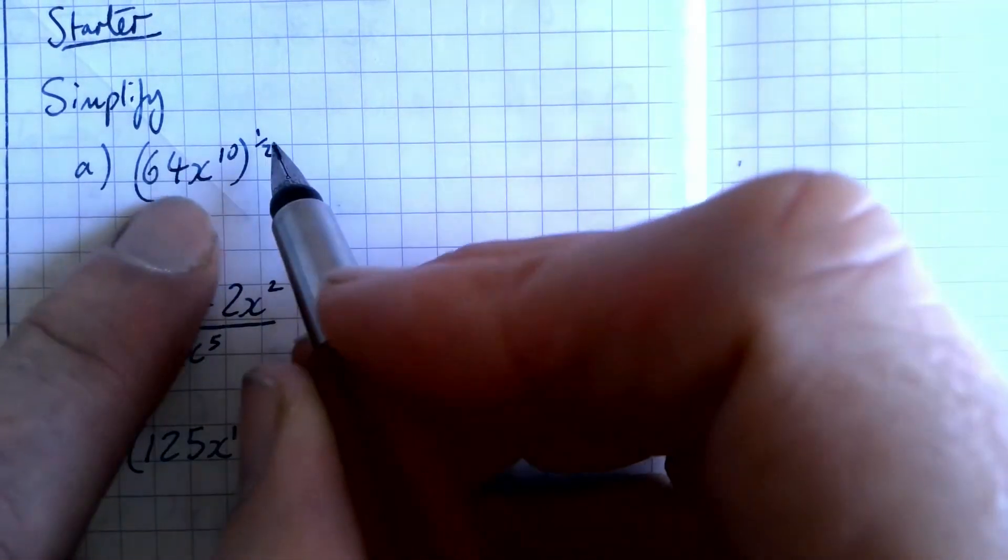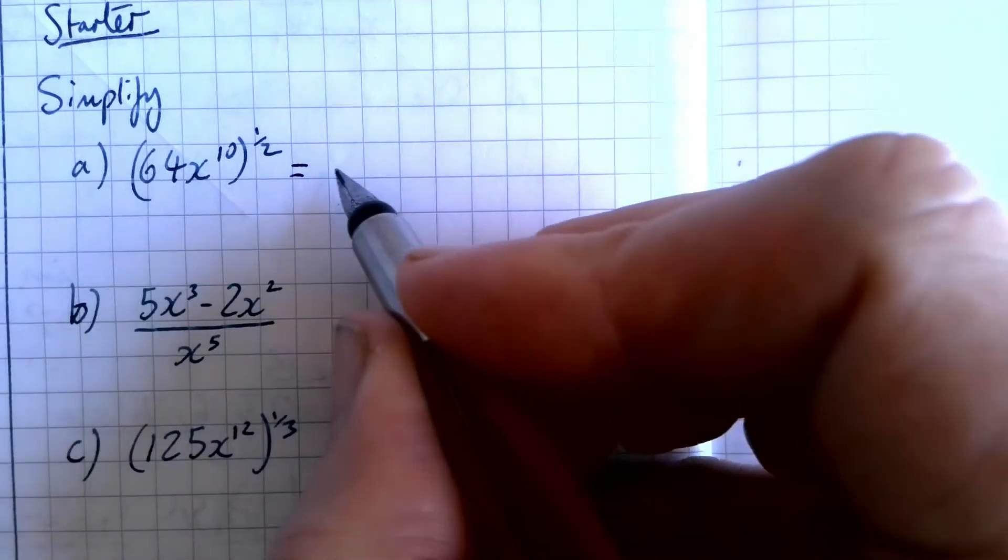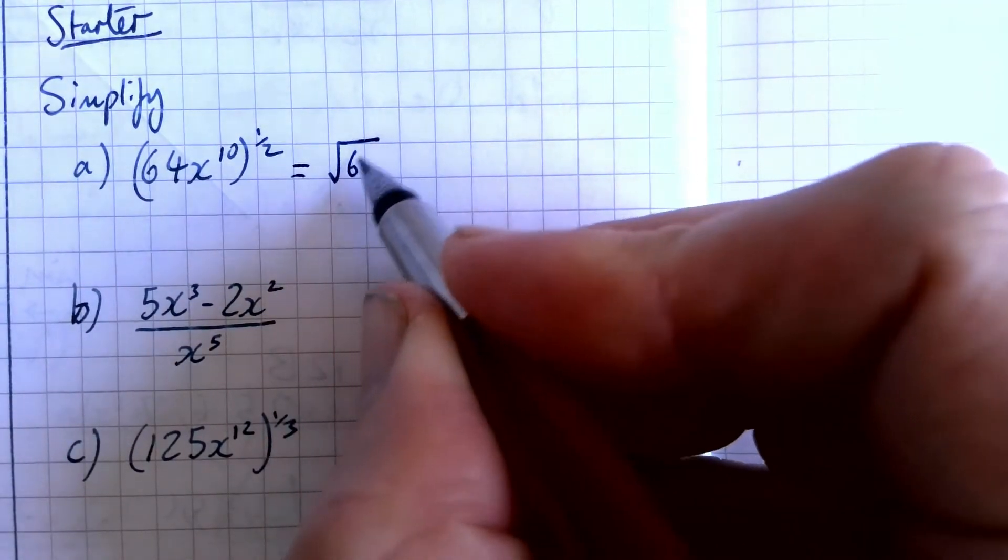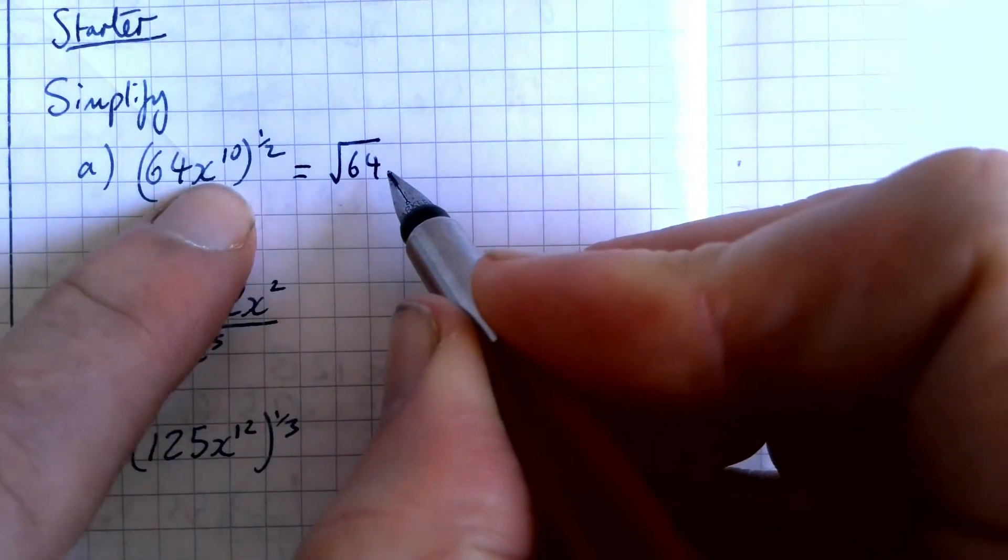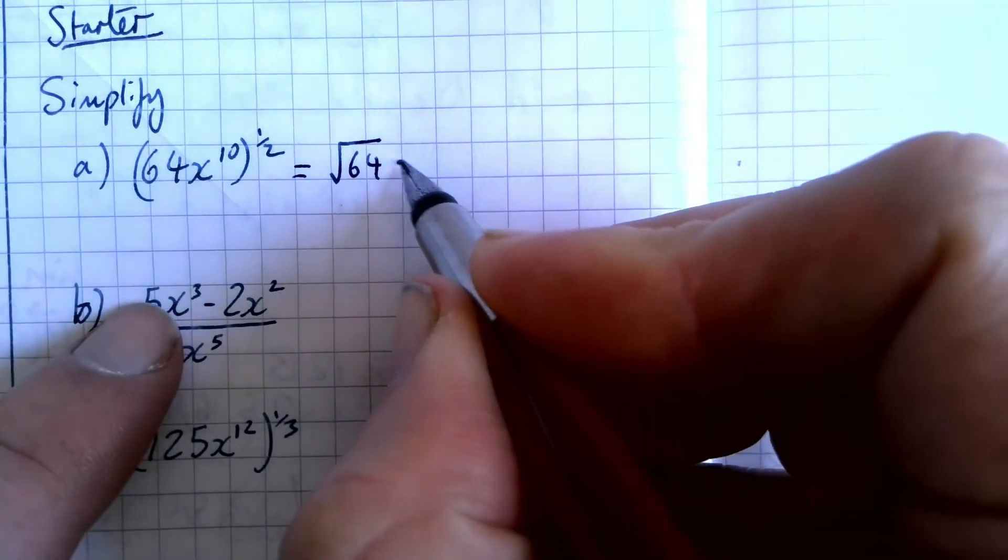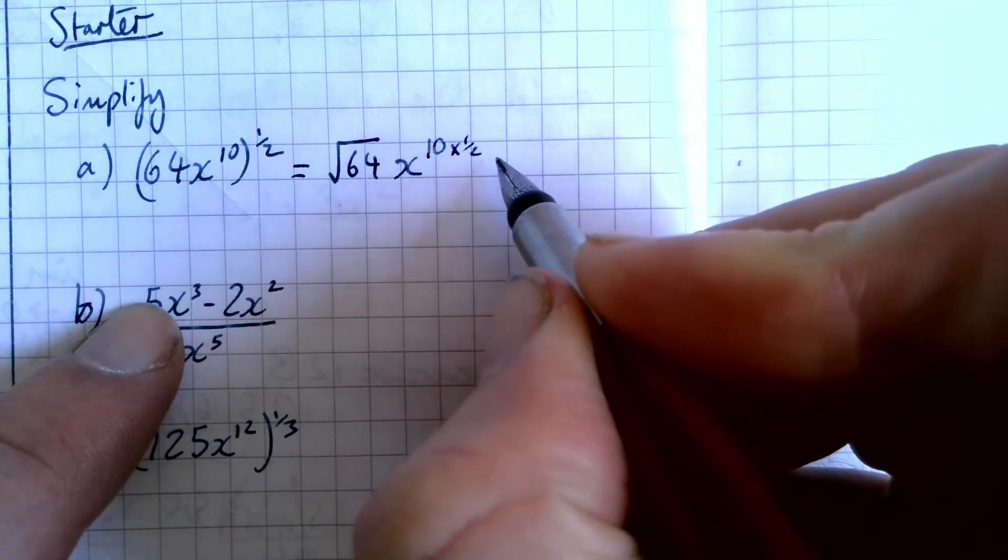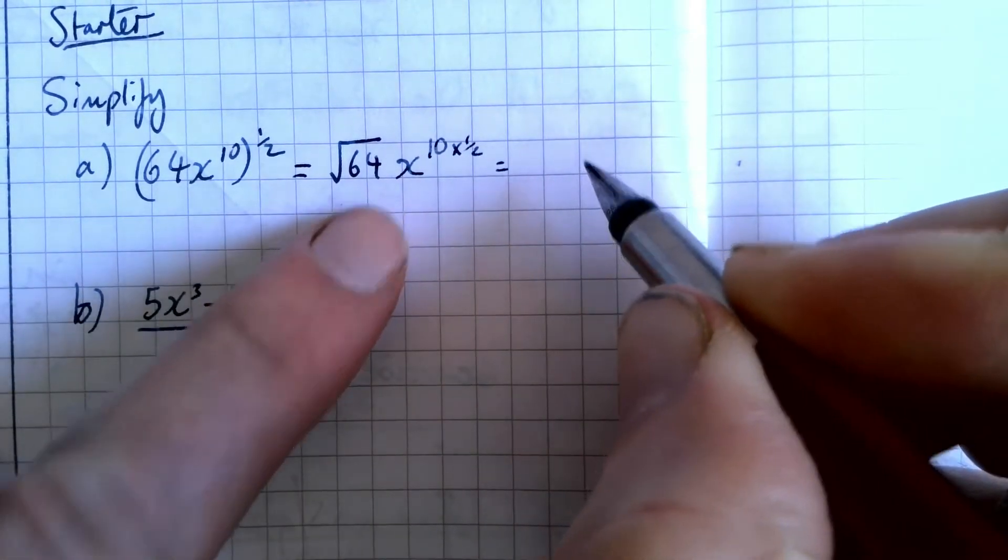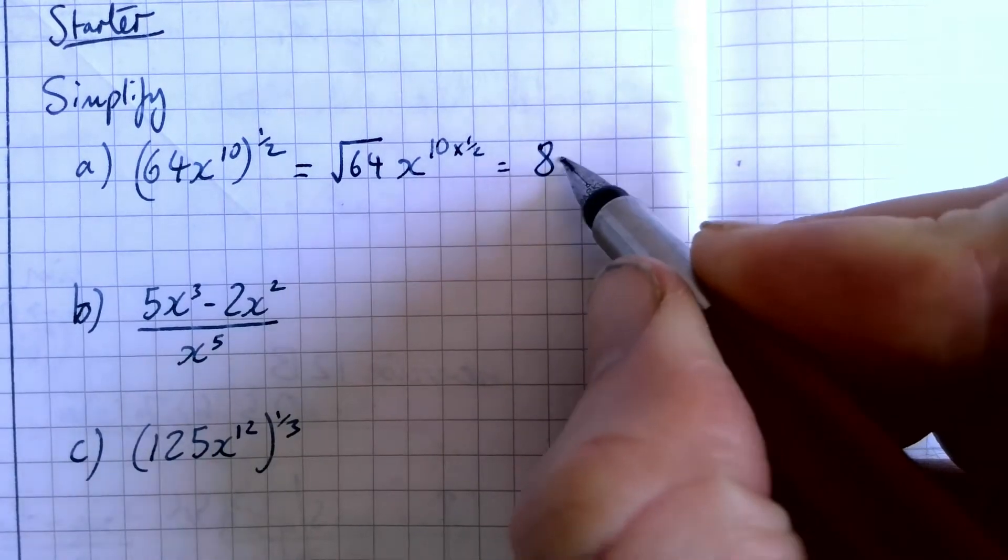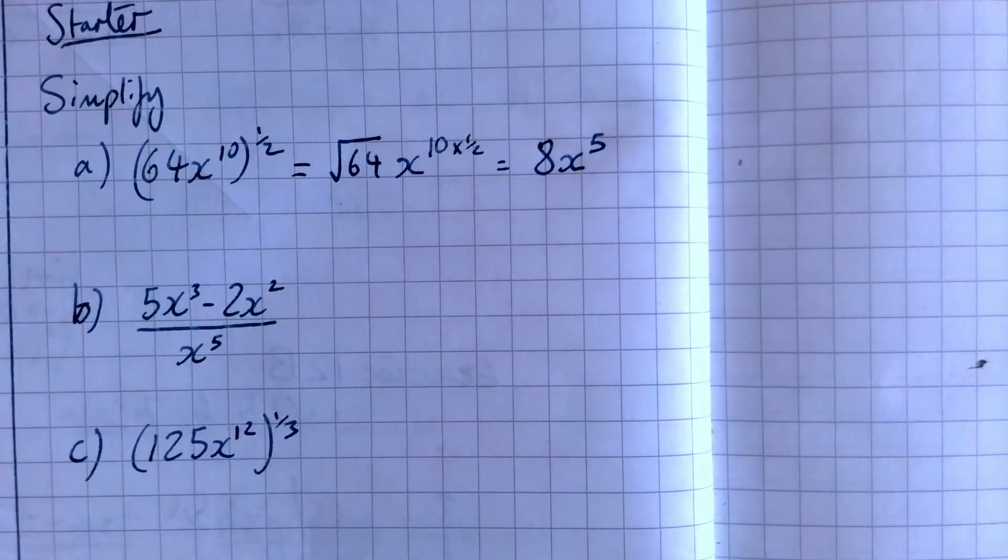So for the first one here, to the power of a half means square root, doesn't it? So the square root of 64 we're going to need to do. And then also when we're dealing with powers, you multiply out of a bracket. So I'm going to write 10 times a half there just to show my thinking. Square root of 64 is 8. Half of 10 is 5. So that's 8x to the power of 5.